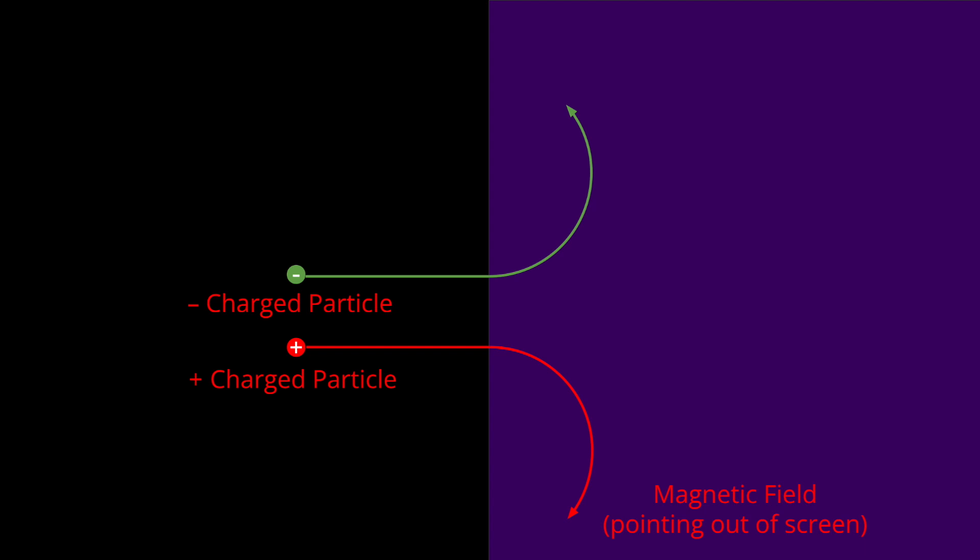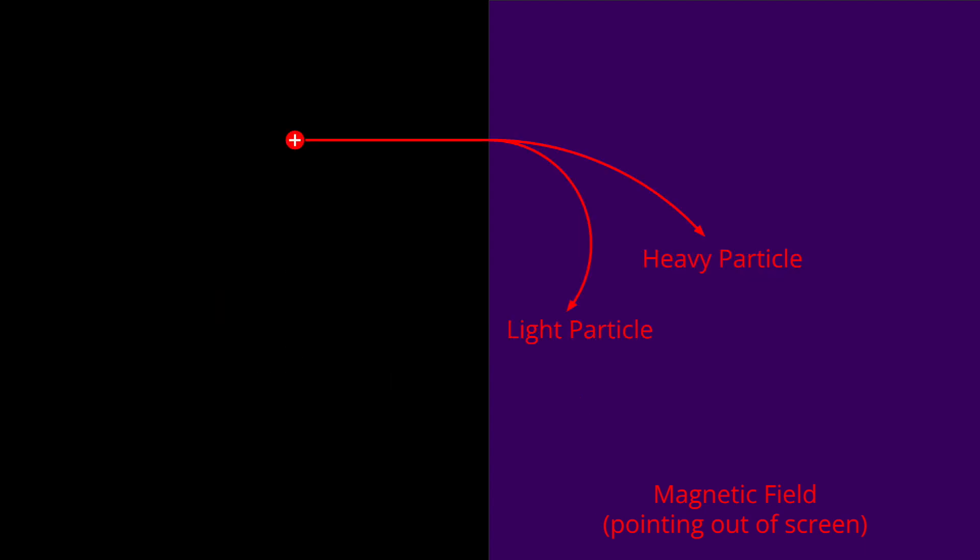One way is to look at the motion of the particles in a magnetic field. Any charged particle moving in a magnetic field will curve around the magnetic field lines due to the Lorentz force. The direction of curvature will be opposite if the particle is positively or negatively charged. And we can predict the radius of curvature if we know the momentum and the charge of the particle.